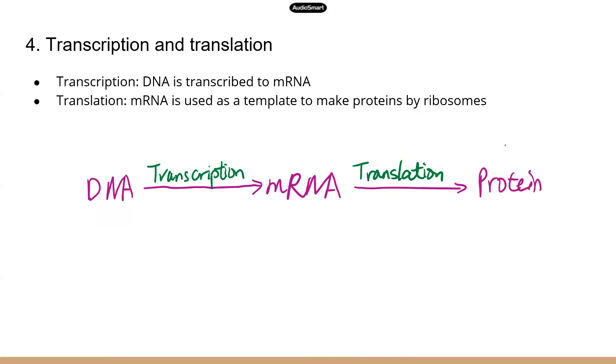So now we're going to move on to transcription and translation. This is a very general process of gene expression. When you express a specific gene, it means you're using that genetic information in DNA and make the protein product. That process has two steps: transcription and translation.